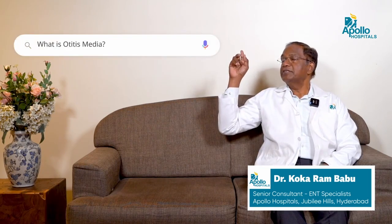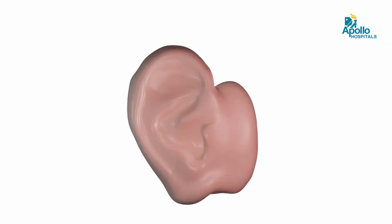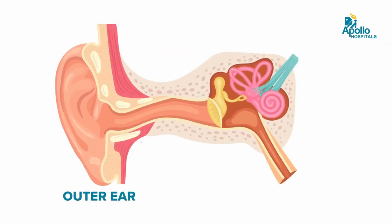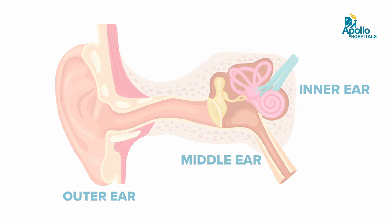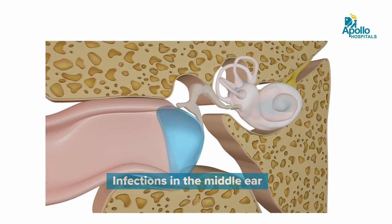What is Otitis Media? Otitis Media simply means it is an infection in the middle ear. We have three parts of the ear: one is called the external ear, one is called the middle ear, and the deeper part is called the inner ear. Today we are going to talk about the middle ear and infections in the middle ear — it is called Otitis Media.